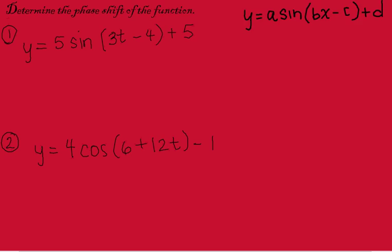So we use this general form. We have y equals a sine of bx minus c plus d. And the first thing we need to do is just label all of these on these functions.